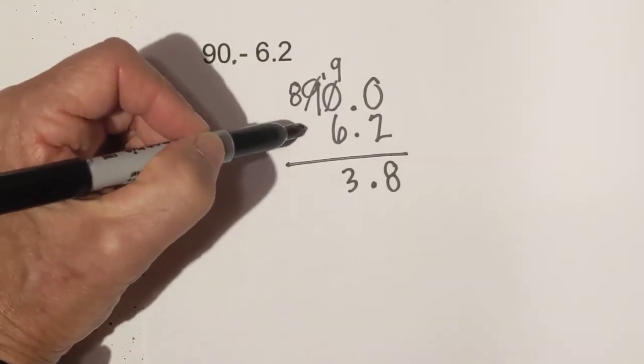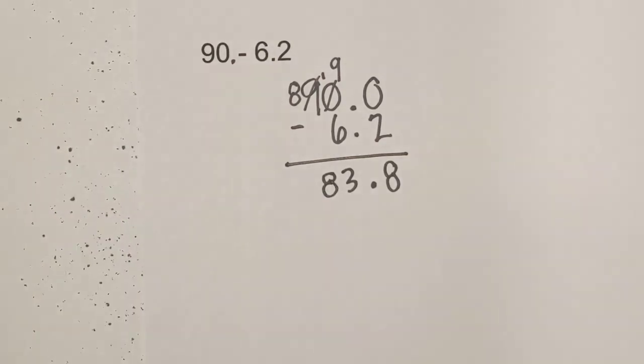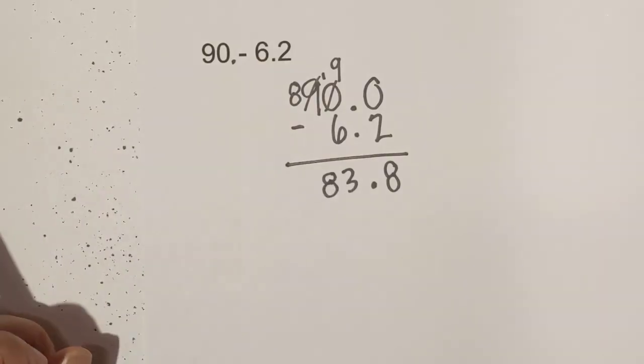And then eight minus zero is eight. So we have 83.8, which is eighty-three and eight tenths.